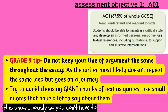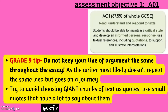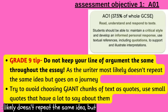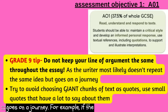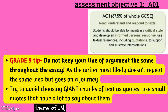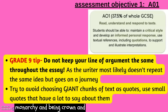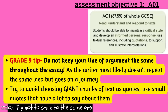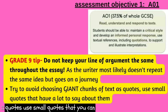Assessment Objective 1 is being able to read, understand and respond to texts in a critical way, using quotations and trying to develop some sort of idea. Normally you'll be doing this unconsciously, so you don't have to worry too much. But here's a grade 9 tip: do not keep your line of argument the same throughout your essay, as the writer most likely doesn't repeat the same idea but goes on a journey. For example, Shakespeare's opinion on power changes throughout Macbeth, and that is the journey you need to go on. Try to avoid using giant chunks of text as quotes — use small quotes that you can have a lot to say about.